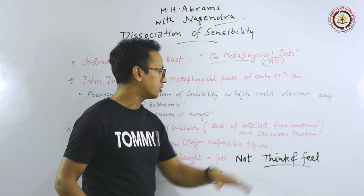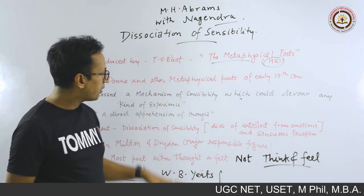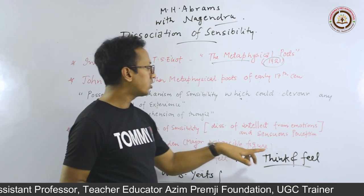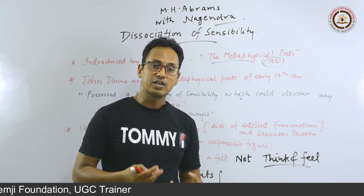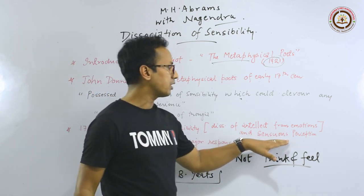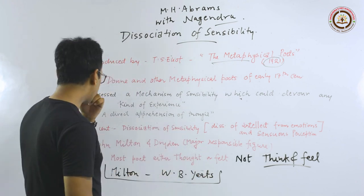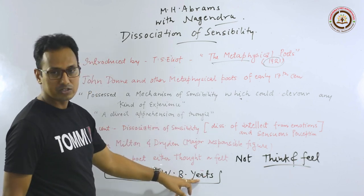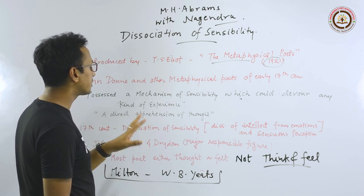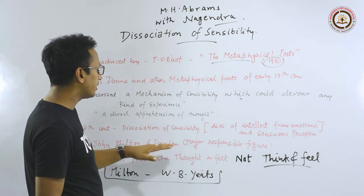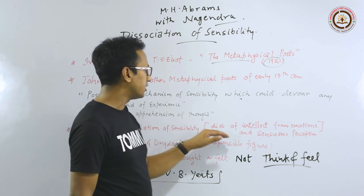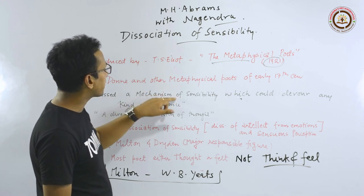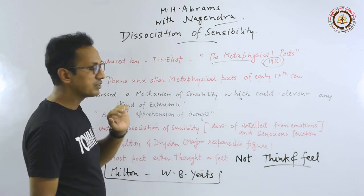Dissociation of Sensibility refers to the dissociation of intellect from emotions and sensuous perception. The metaphysical poets and some Elizabethan dramatists had thinking, emotions, and sensuous perception very nicely intermingled together. After that, Dissociation of Sensibility occurred and remained till W.B. Yeats. The major figures held responsible by T.S. Eliot were Milton and Dryden, who were responsible for bringing this dissociation. Eliot said that metaphysical poets possessed a mechanism of sensibility which could devour any kind of experience.